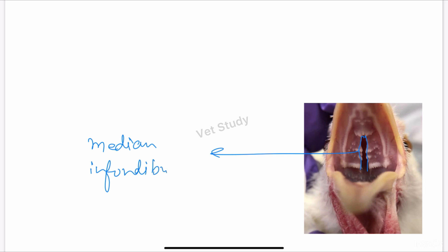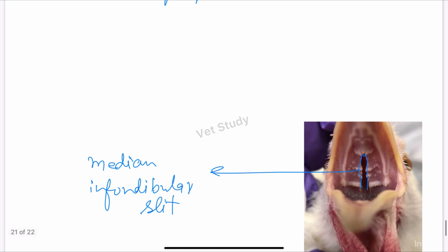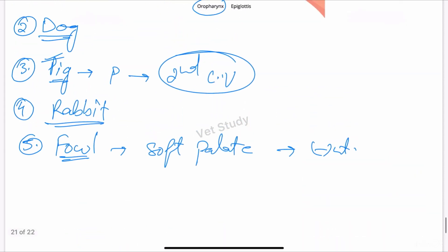It is the common opening for the left and right auditory tubes. So this is peculiar to poultry - the soft palate is absent and the median infundibular slit is present. This covers the species differences in the pharynx.